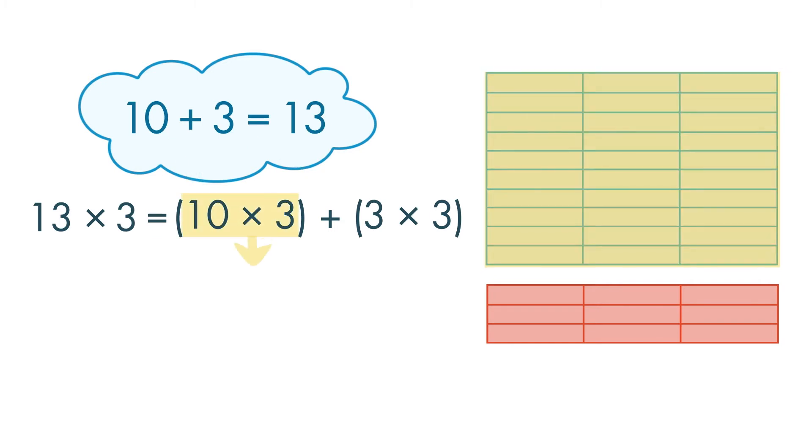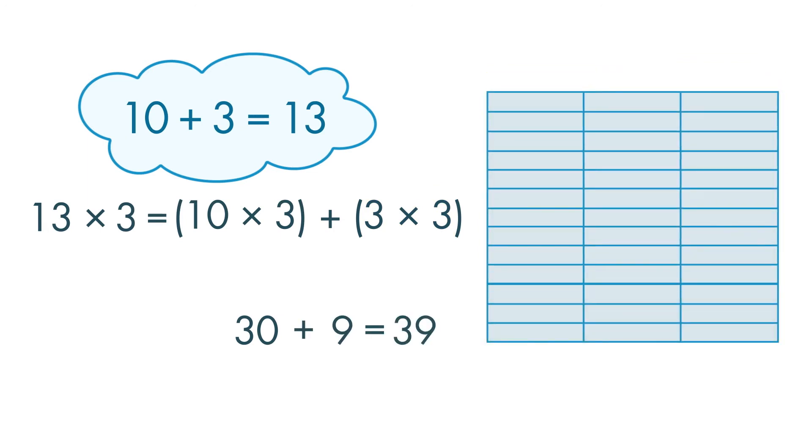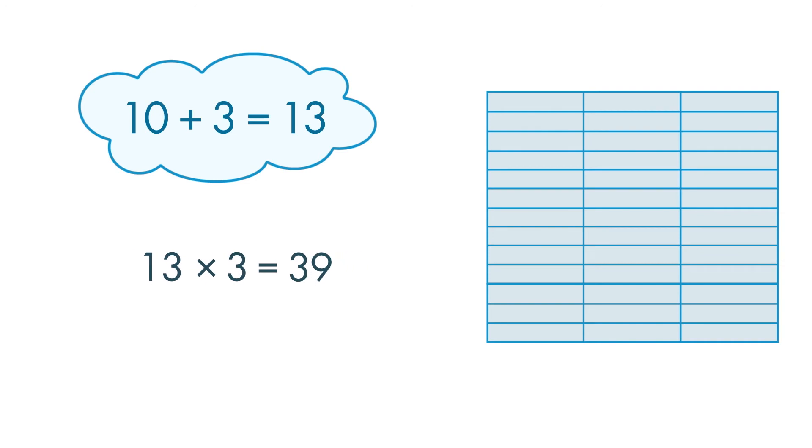10 times 3 is equal to 30. And 3 times 3 is equal to 9. 30 plus 9 is 39. So, 13 times 3 is equal to 39.